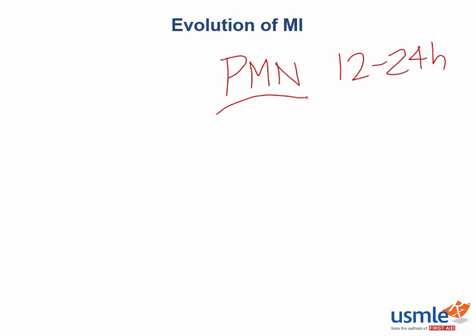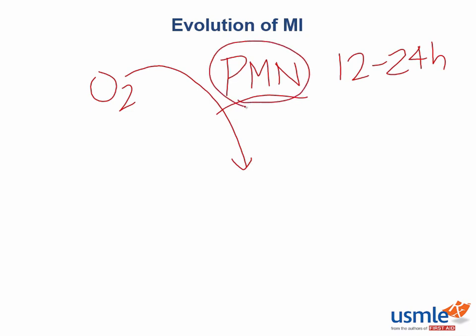Very important is reperfusion injury. Let's say our patient was sent to the catheterization lab to restore blood flow to the myocardium by putting in a stent. All of a sudden, a ton of oxygen-rich blood comes into the recently infarcted area. The problem is that neutrophils are already in that infarcted zone trying to break down necrotic myocytes, and they use oxygen to make reactive oxygen species. This actually leads to more damage.